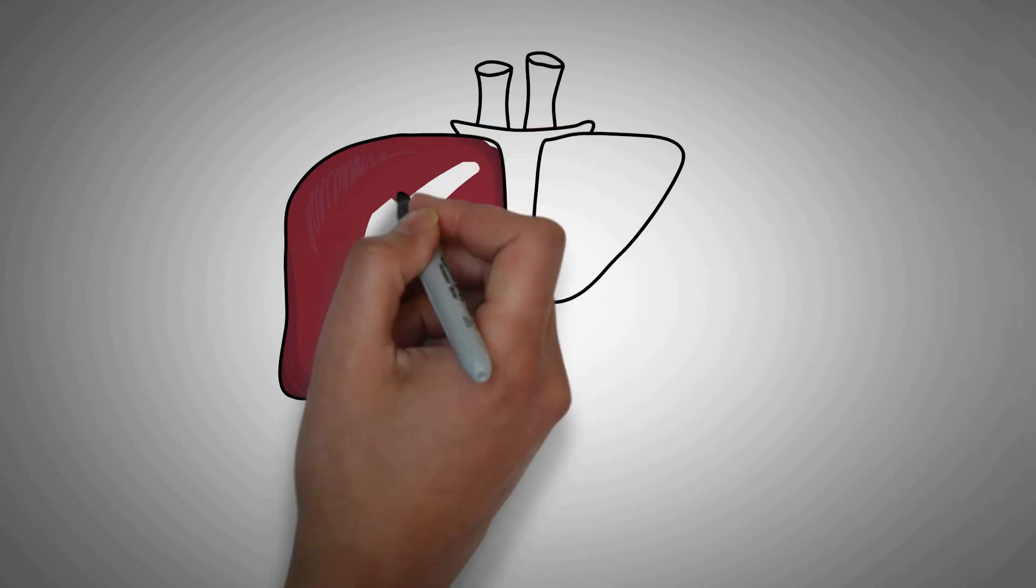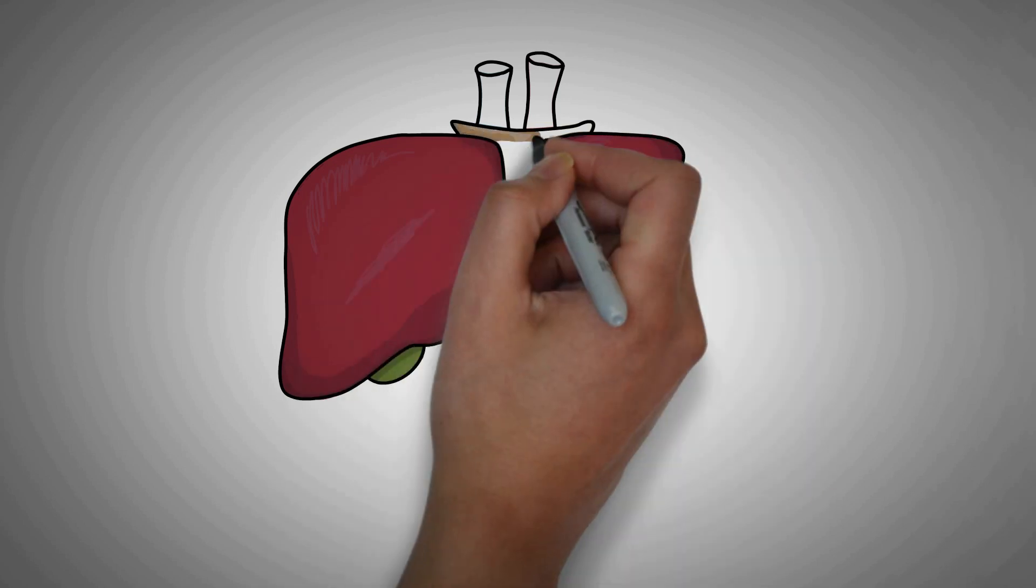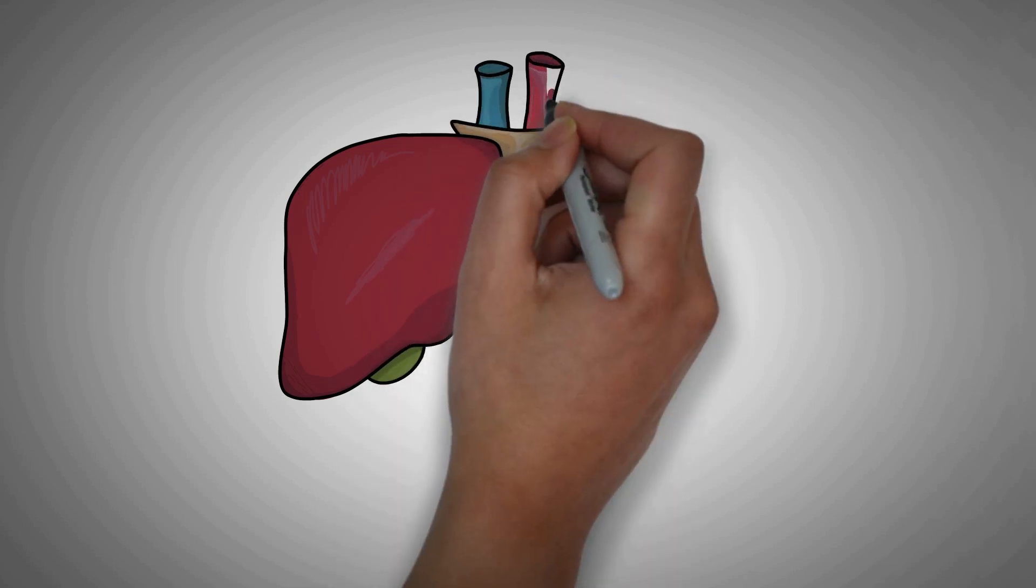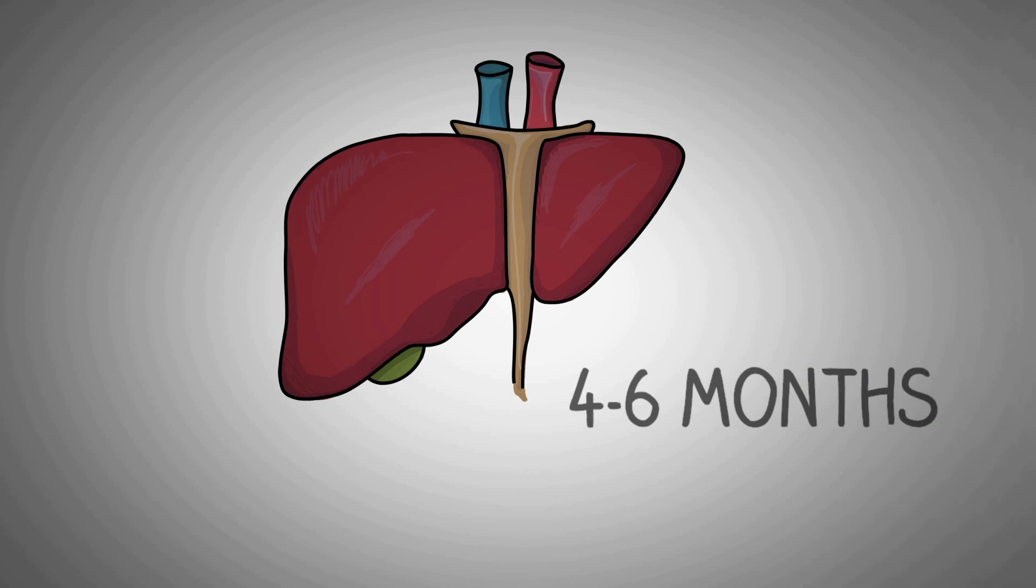Now coming back to the question we asked in the beginning that was if you remove more than half of your liver, how much time will it take to regenerate it completely? And the answer to this question is 4 to 6 months. Yes, in about 6 months, you will have a brand new liver.